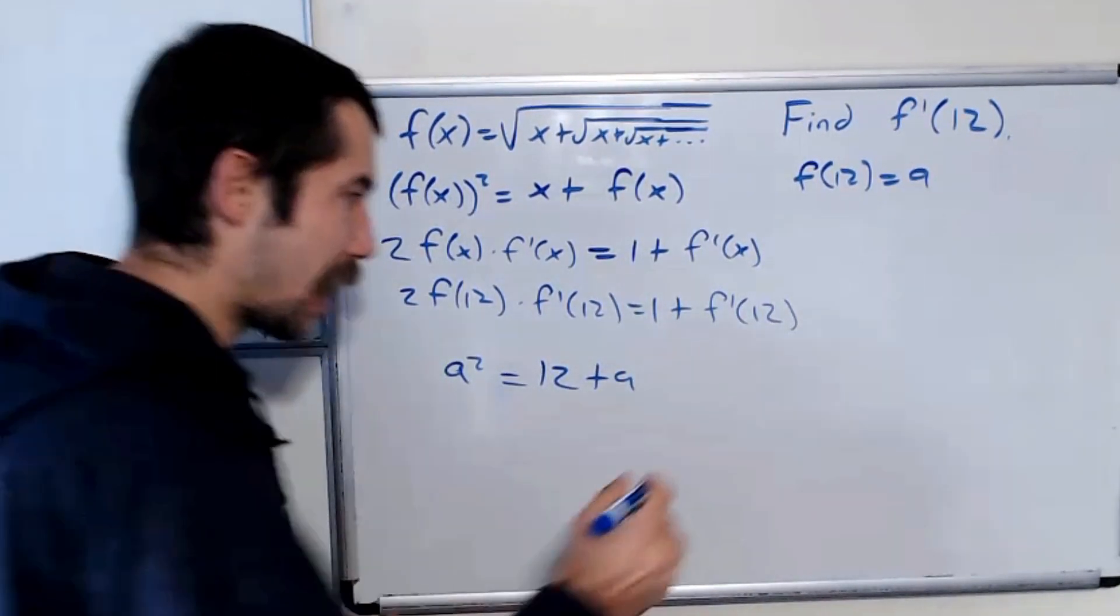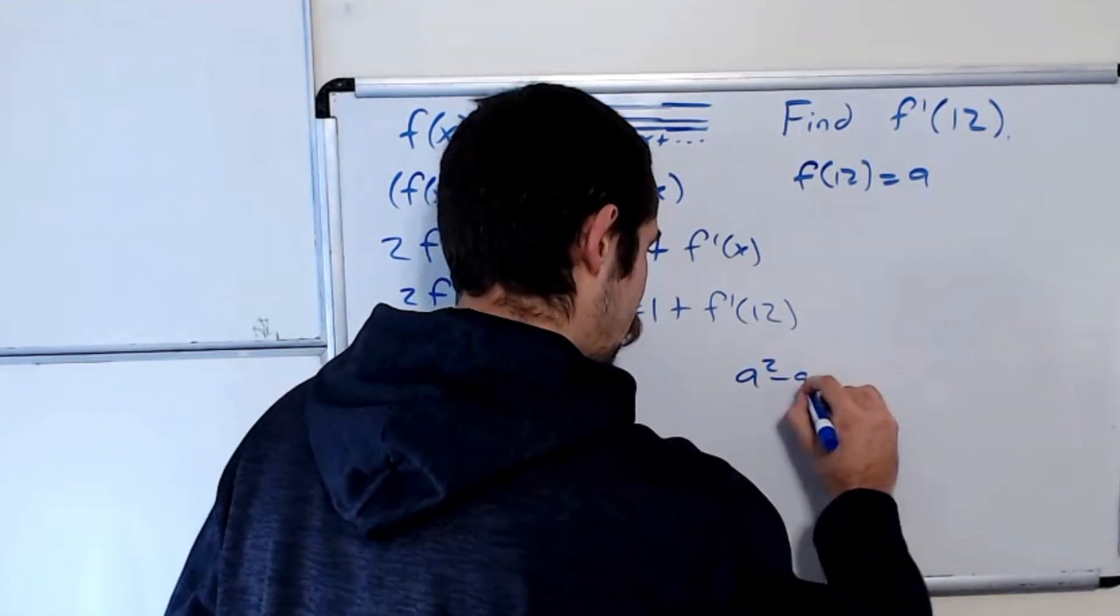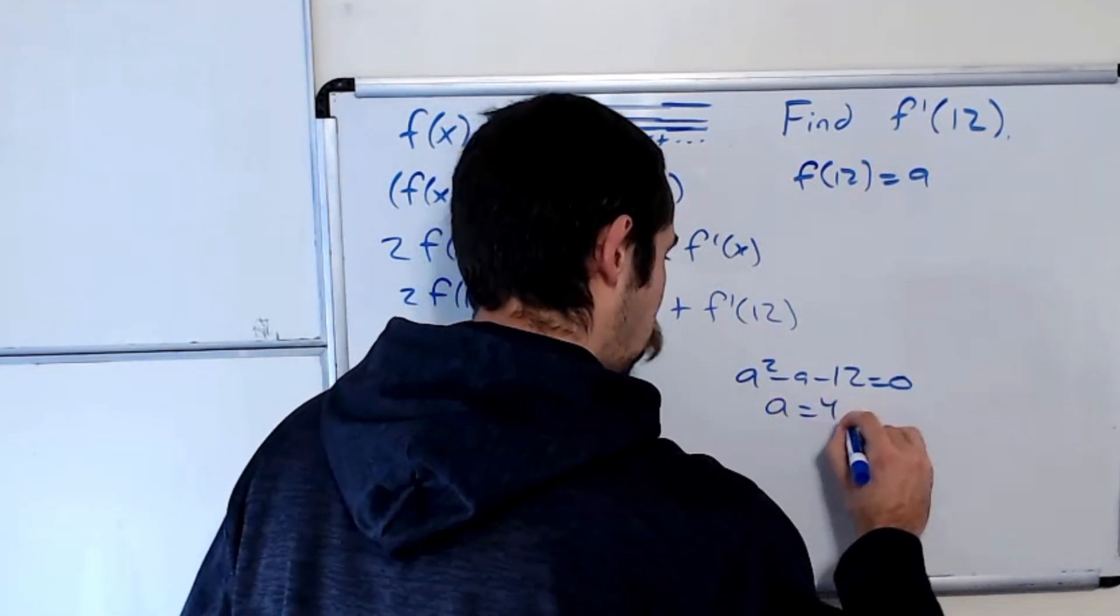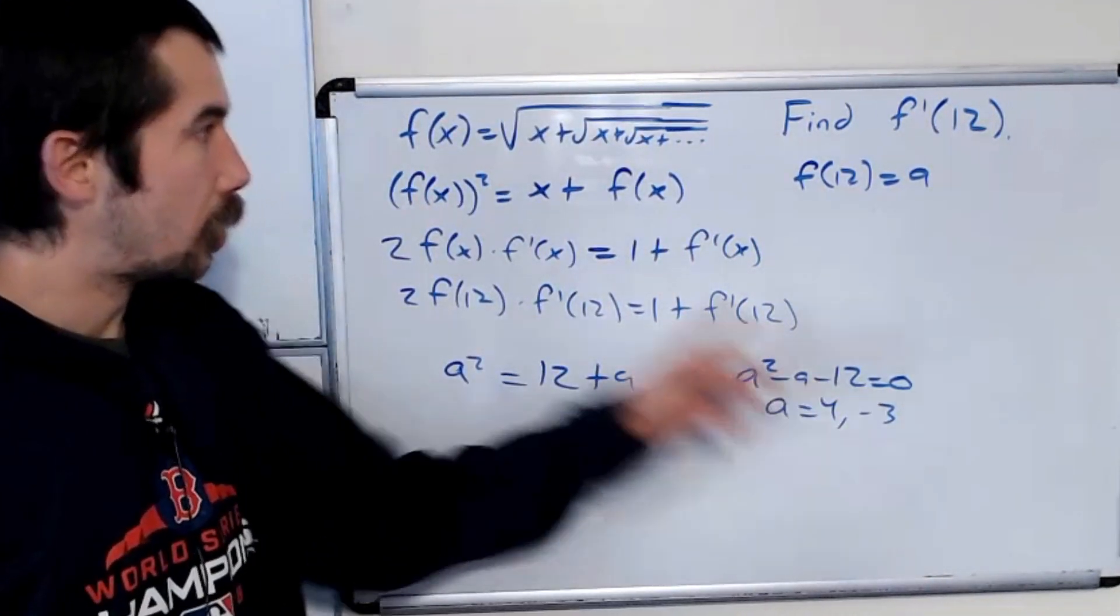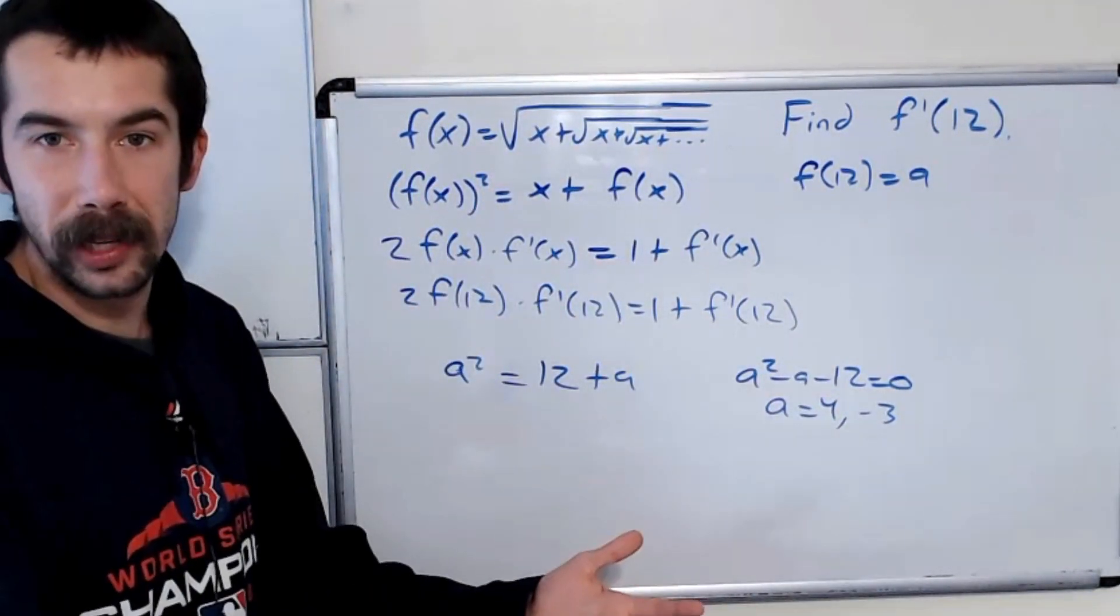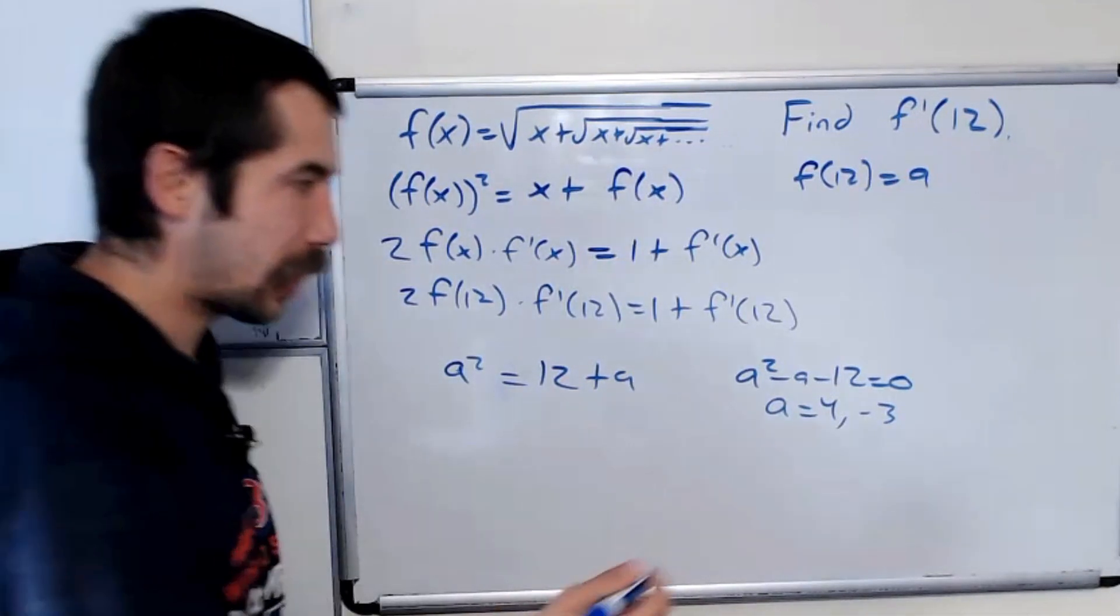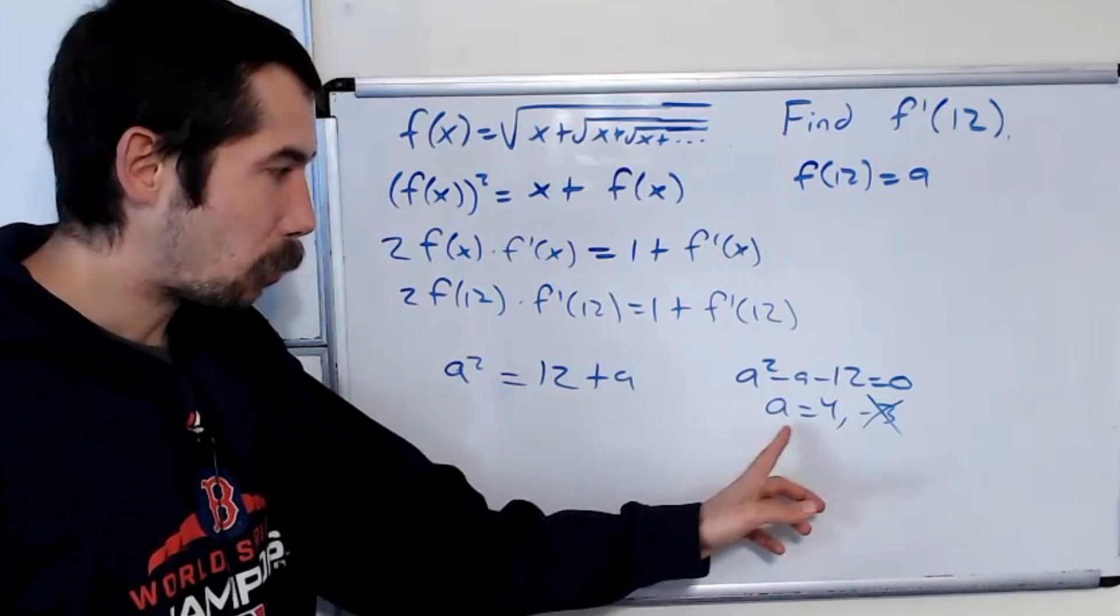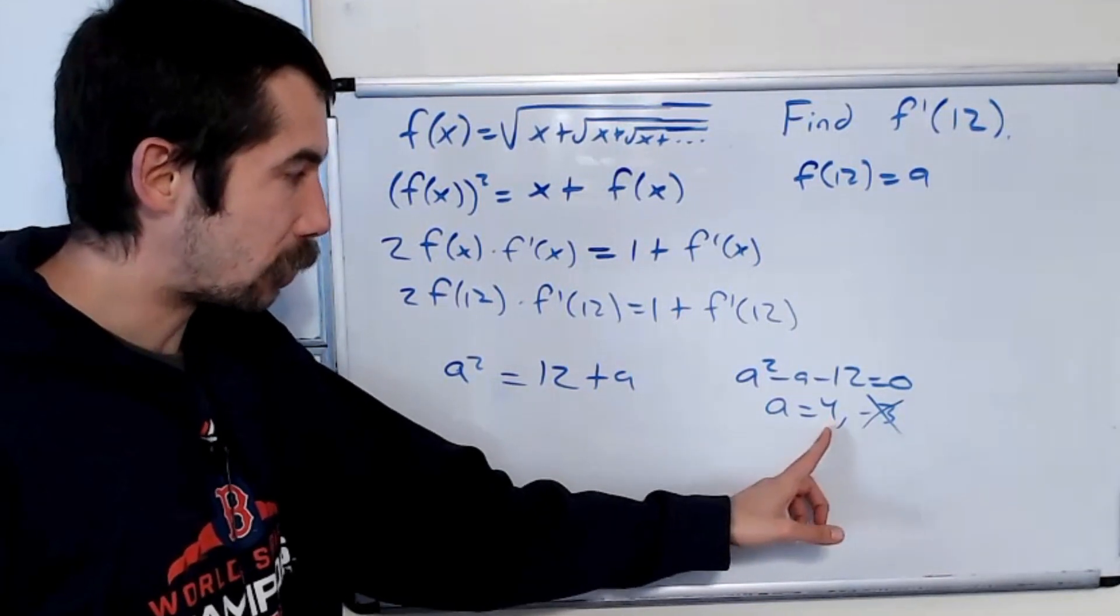Bringing everything to one side, we have a squared minus a minus 12 equals 0. That gives us a is equal to either 4 or negative 3. But our function is the square root of something, which is always non-negative. So we could throw out negative 3, we know that f of 12 is going to be 4.